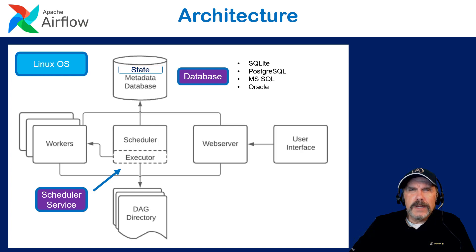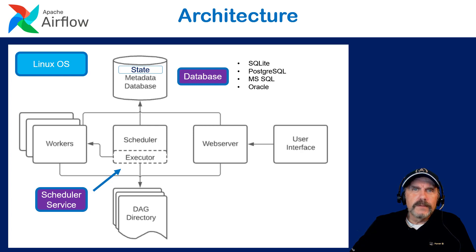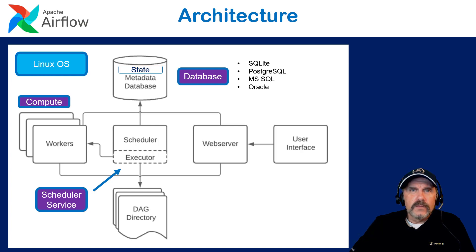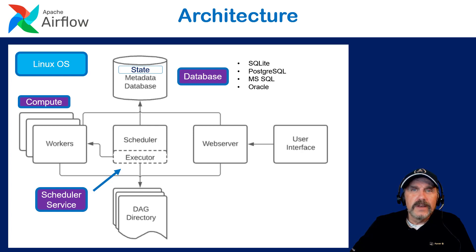Now we have a scheduler and executor — this may look similar to Apache Spark. The executor can run within the scheduler process, so you can keep it all as one. You don't necessarily have to scale out to workers, which is fine for a hello world or dev environment. But you'll probably want to scale out using workers, in which case the executor runs and controls the workers separately. On-premises, this could be fairly complex, but in a cloud environment, getting those workers created shouldn't be difficult. Configuring it for Kubernetes is more involved but doable, and probably easier in a cloud environment.